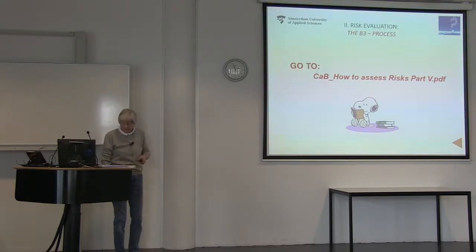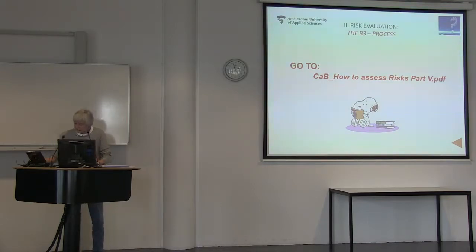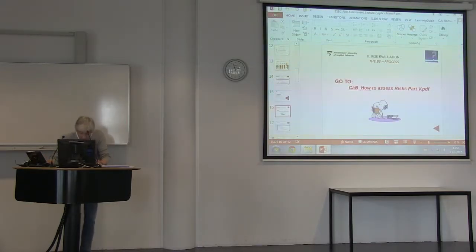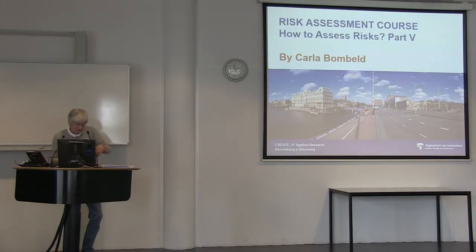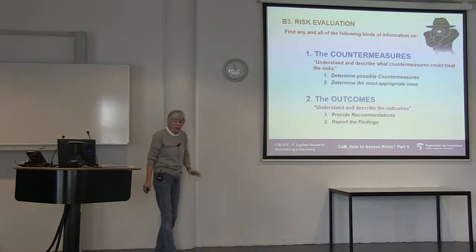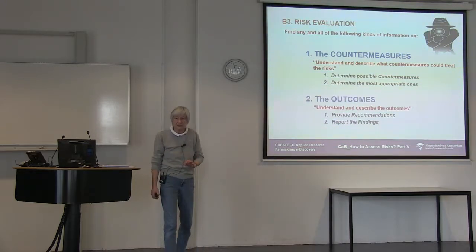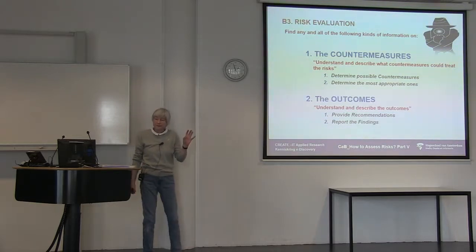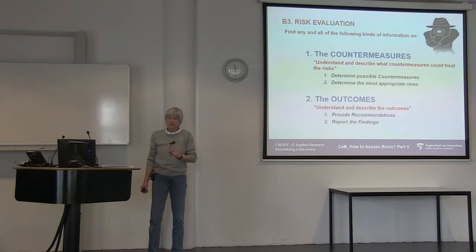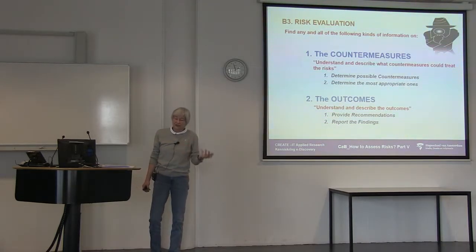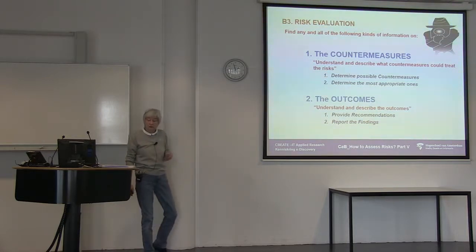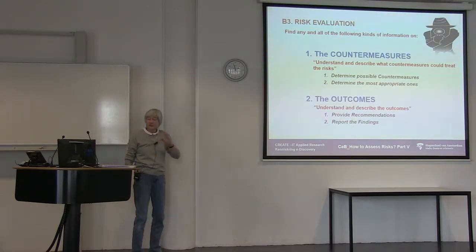Now we move to risk evaluation — our final stage, labeled B3. We have to do two things: first, define countermeasures — the final element out of the risk model. After establishing the most appropriate countermeasures according to the calculated risks, we produce the outcomes, give recommendations, and finally write our risk assessment report.